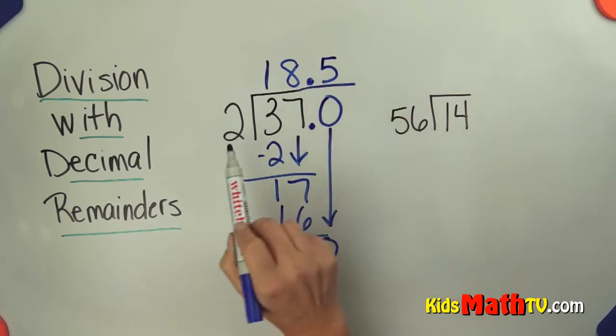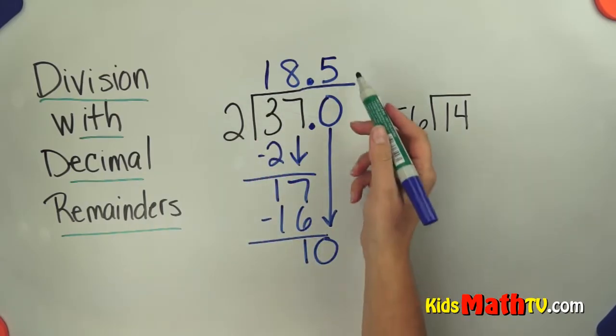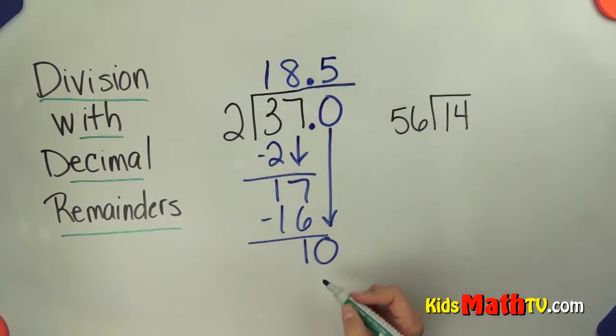So 37 divided by 2 is 18 and 5 tenths, or 18 and a half. I can finish it out. 5 times 2 is 10, subtract and we get zero.